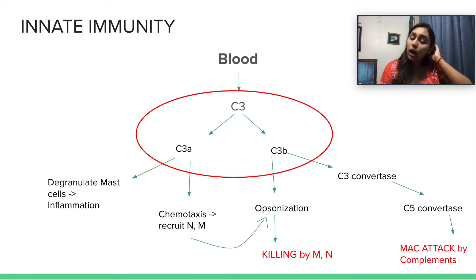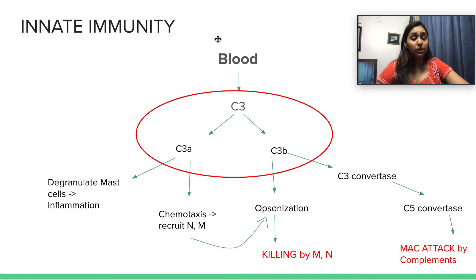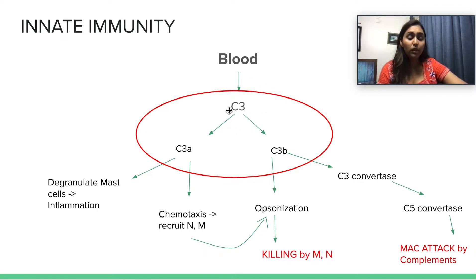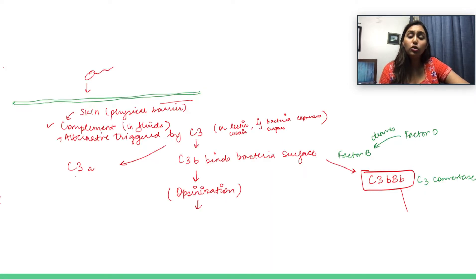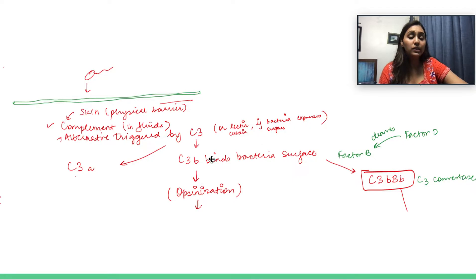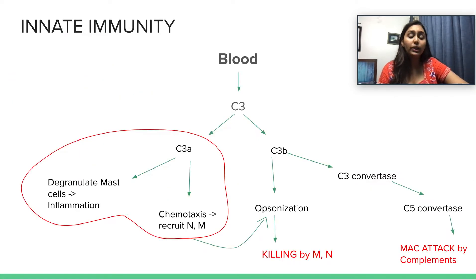Moving on to our flowchart: let's say there has been a breach in the skin and a bacteria enters the blood. The first thing that's going to identify the bacteria is complement C3, which is then cleaved into C3A and C3B. The bacteria entering the skin triggers complement C3 activation via the alternative pathway, splitting it into C3A and C3B, both of which have different functions.